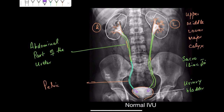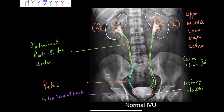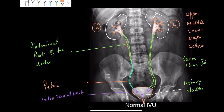The part of the ureter running within the wall of the urinary bladder is the intramural part, also called the intravesical part of the ureter. The place where they are opening is the trigone. Then this urinary bladder continues as the urethra. I'm sure everything is made clearer to you — thank you for watching this video.